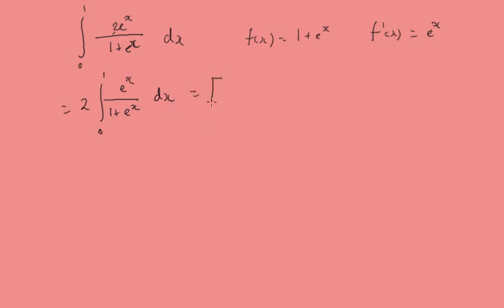So we've got 2 log of 1 plus e to the x between 0 and 1, which is going to give us 2 log of 1 plus e minus 2 log 2. Because e to the 0 is 1, so it's 1 plus 1 is 2. There we go. And this gives us, this is tidying this up using our rules for logarithms: 2 log of 1 plus e over 2. So I hope that helps.